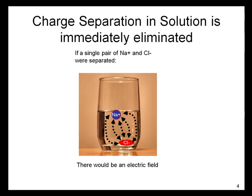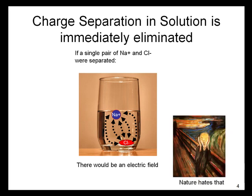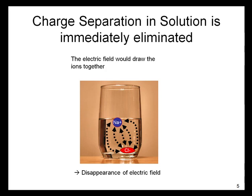If a single pair of a sodium and a chloride ion were separated, there would be an electric field. Nature abhors such charge separations, so any charge separation in solution is immediately eliminated. The way that happens is there is a resulting electric field from the charges being separated. This newly created electric field would immediately draw the ions together, which would lead to the disappearance of the electric field.